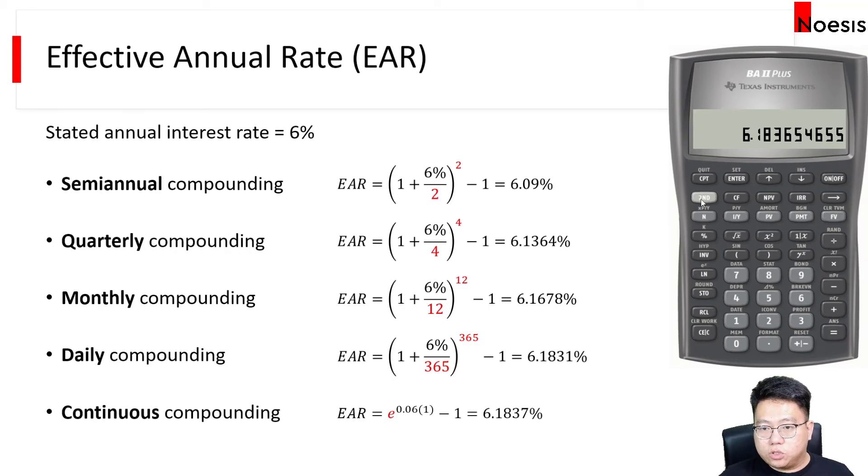And the calculator also allows you to enter the effective rate, and then you can compute the nominal interest rate, you can work it backwards as well. The only thing you cannot compute backwards is the compounding frequency per year.